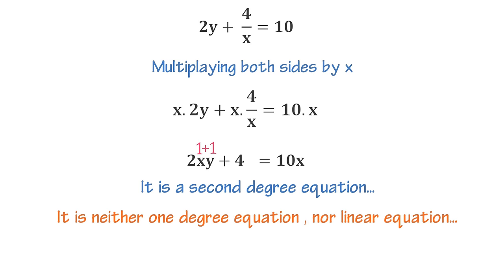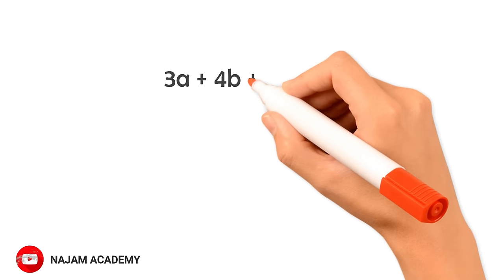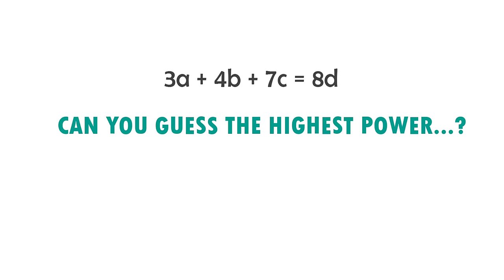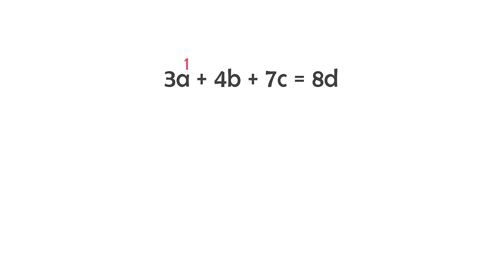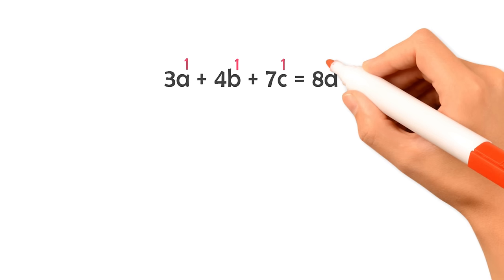Now let me give you one last example: 3a plus 4b plus 7c is equal to ad. Can you guess its highest power? I hope so. There are four terms in this equation.